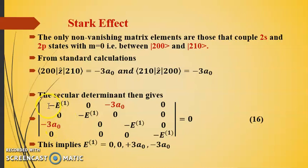And this element was 0, so it is 0 minus E^(1). Similarly, 0 minus E^(1), 0 minus E^(1). So this comes on the diagonal as we are going to determine the eigenvalues. And when we solve this, we get E^(1) equal to 0, 0 plus 3a_0 and minus 3a_0.